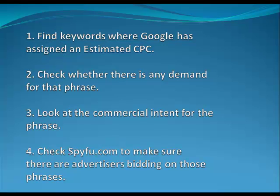So I've tried to put together a system to check keyword phrases for buyer intent without having to test them with pay-per-click. The very first test I'd suggest is to find keywords where Google has assigned an estimated cost per click, because those are phrases Google thinks are commercial. The next step is to check whether there is actual demand — are people searching for that particular phrase? In Market Samurai, you've also got PBR to check that people are searching for the phrase in the exact order you intend — is it 'beer diet' or 'diet beer'? Two totally different things.